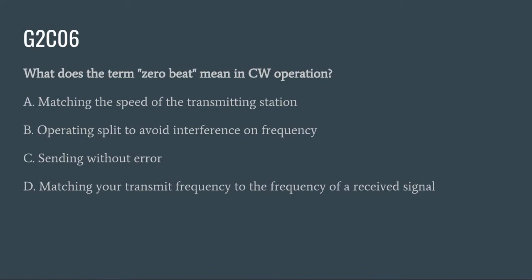G2C06: What does the term zero beat mean in CW operation? A. Matching the speed of the transmitting station. B. Operating split to avoid interference on frequency. C. Sending without error. Or D. Matching your transmit frequency to the frequency of a received signal. The correct answer is D: matching your transmit frequency to the frequency of a received signal.